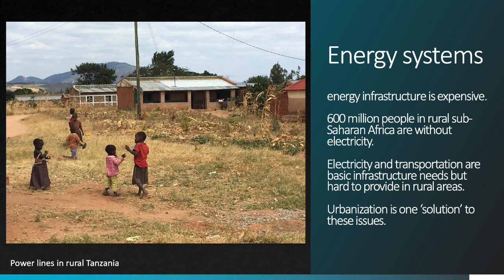These systems, for obvious reasons, are expensive to build. The photo here shows something that's actually fairly rare: power lines in a rural part of Eastern Africa, in this case Tanzania. In rural Sub-Saharan Africa, about 600 million people do not have access to electricity. No electricity means no refrigeration, and that means a higher risk of foodborne disease. No electricity means no light at night to study or do homework, and no ability to charge a cell phone, let alone a bigger piece of electronics. In these settings, transportation is also very limited — public buses are rare, and ownership of motorcycles and cars is very limited or non-existent.